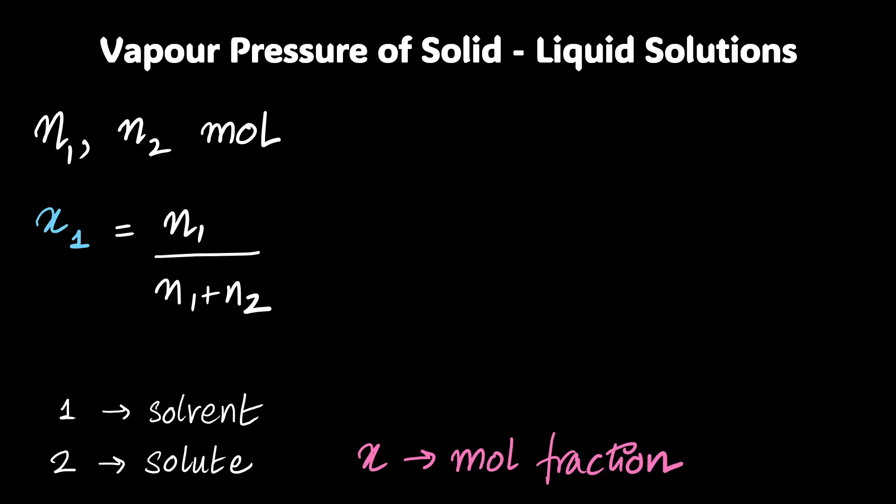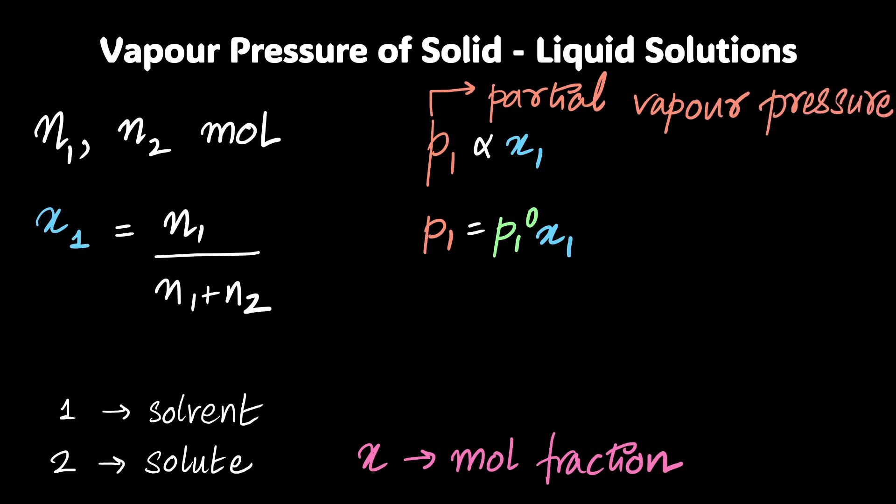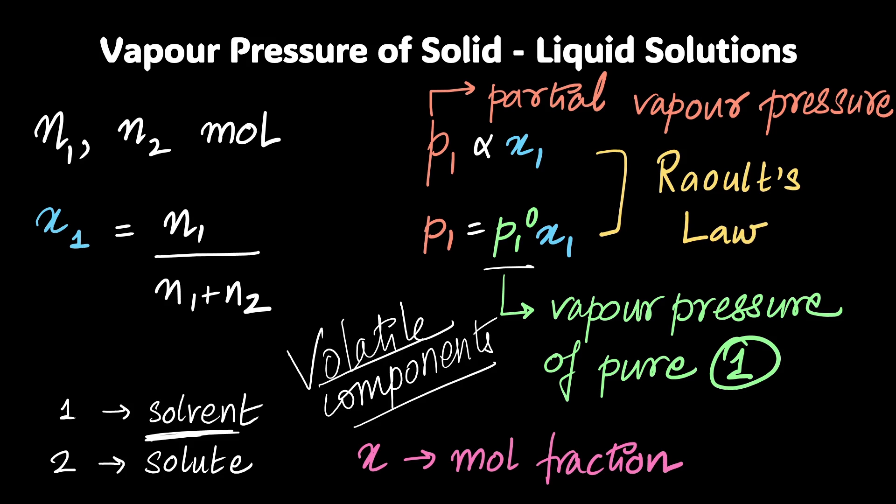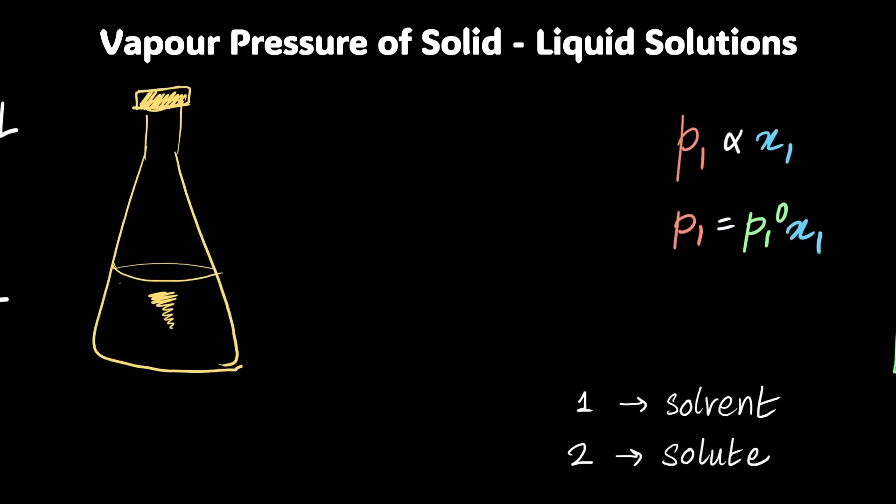Empirically, it is known that P₁ is going to be proportional to x₁. What is P₁? It's the partial vapor pressure of one, which was the solvent. And the proportionality constant happens to be P₁⁰, which is the vapor pressure of pure one. This only works for volatile components and this is where we have the answer to the question that we asked in the starting of this video. This empirical relationship is known as Raoult's law. I've covered this in another video as well.